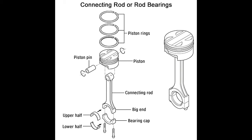The crankshaft is placed in grooves called saddles inside the engine block. Ordinarily, the power produced by all the connecting rods may disturb the position of the shaft, rather than rotate it. To prevent this, main bearings are inserted between the crankshaft and the saddles of the engine block, so that the shaft moving part can rotate freely inside the block stationary part.